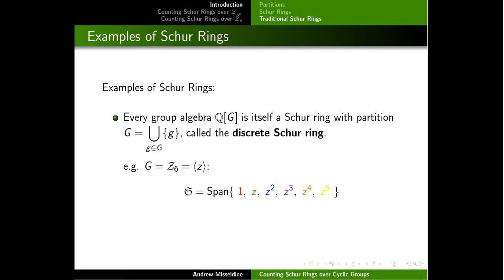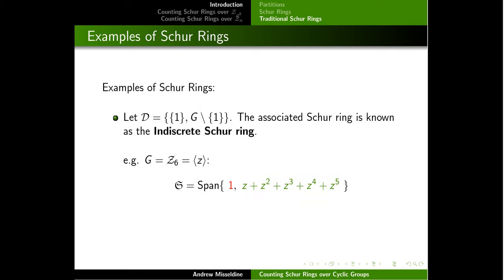To give a few examples of Schur rings: one simple example is the discrete Schur ring, where you take the entire group and partition it into singletons. So the group itself is a Schur ring — if we take the cyclic group of order six, we partition it by taking everything by itself, shown by different colors for the different cells. On the other extreme, we have the indiscrete Schur ring, where the identity is by itself and then everything else is fused together. Looking at the cyclic group of order six, you have the identity by itself and then everyone else in one large class.